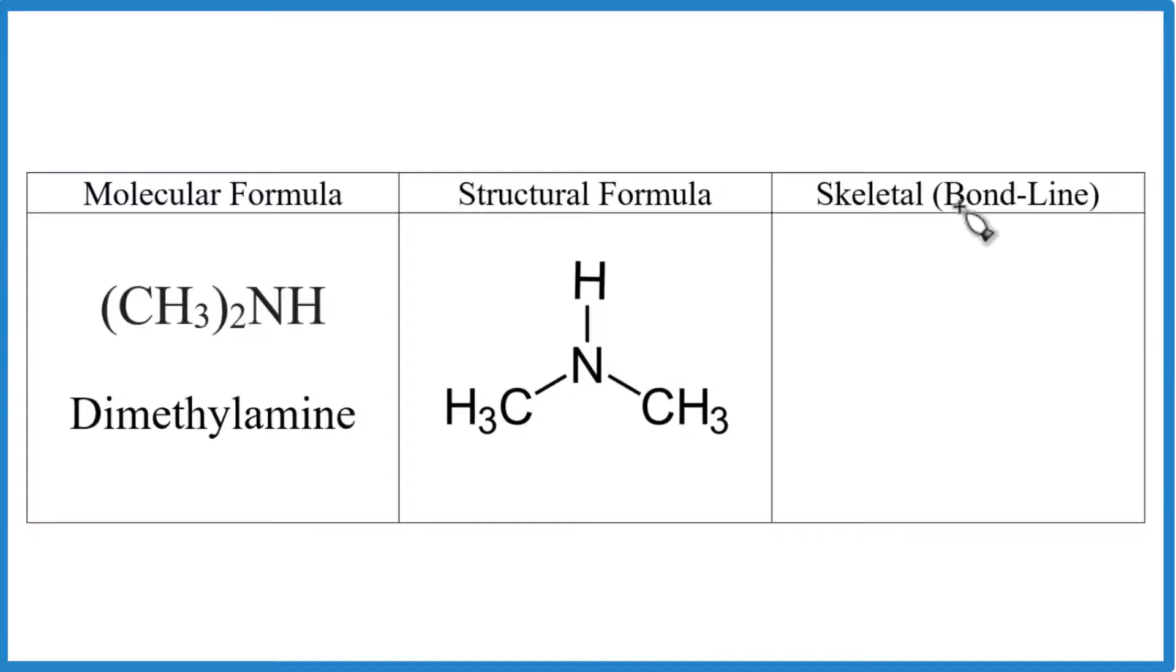If we want to draw the skeletal or the bondline structure, we'll have a line here, here, we'll have our nitrogen. And with the nitrogen, we will show the hydrogen, but we don't show the hydrogens bonded to carbons. Looks like this. So these would be carbon atoms here, and each one would have three hydrogens bonded to it. But we don't show those.